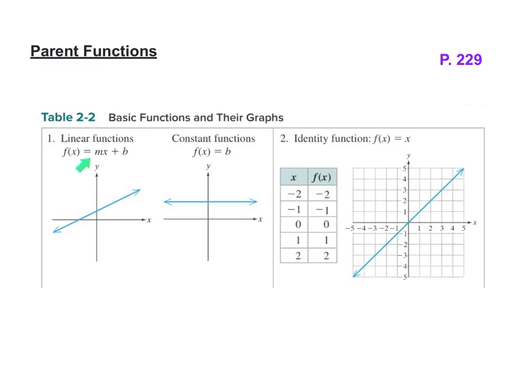We have linear functions. They can be put into slope intercept form, y equals or f of x equals mx plus b. And then, of course, if it's a constant function, it's going to be y equals something, which makes it a horizontal line every time. The identity function is y equals x, and that always cuts right through the first and third quadrant. And notice how x and y are the same. That's why it's called the identity, because they mirror each other.